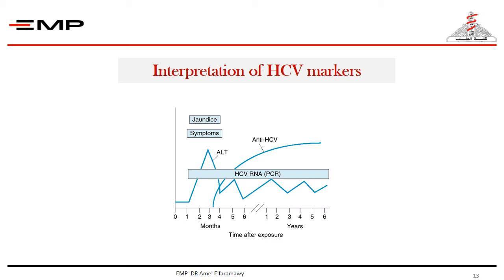Patients with positive HCV IgG should have subsequent testing for serum hepatitis C virus RNA in order to determine active infection.